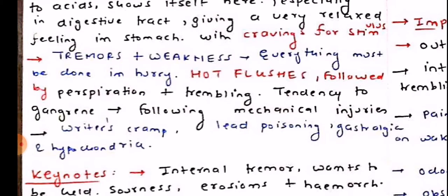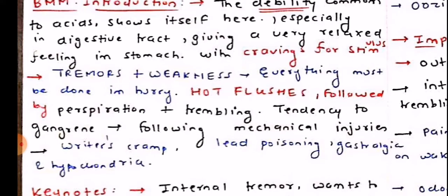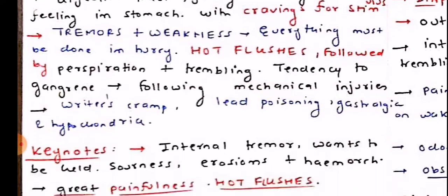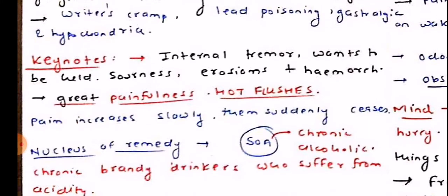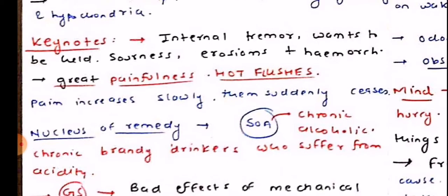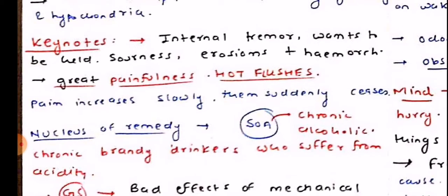That was the whole gist of Sulphuric acid from Dr. Boericke's point of view. Now let us look into the keynotes of Sulphuric acid. There is internal tremors, wants to be held, sourness, erosions, and hemorrhagic diathesis.